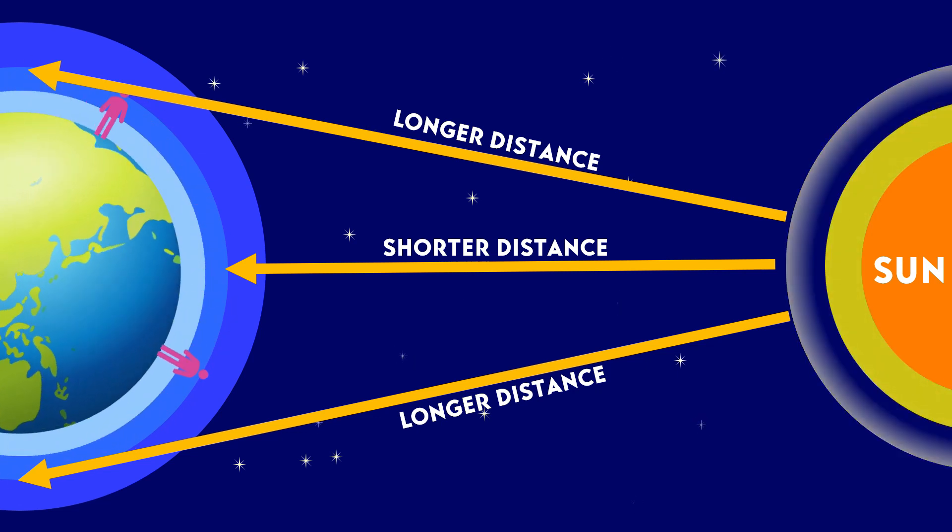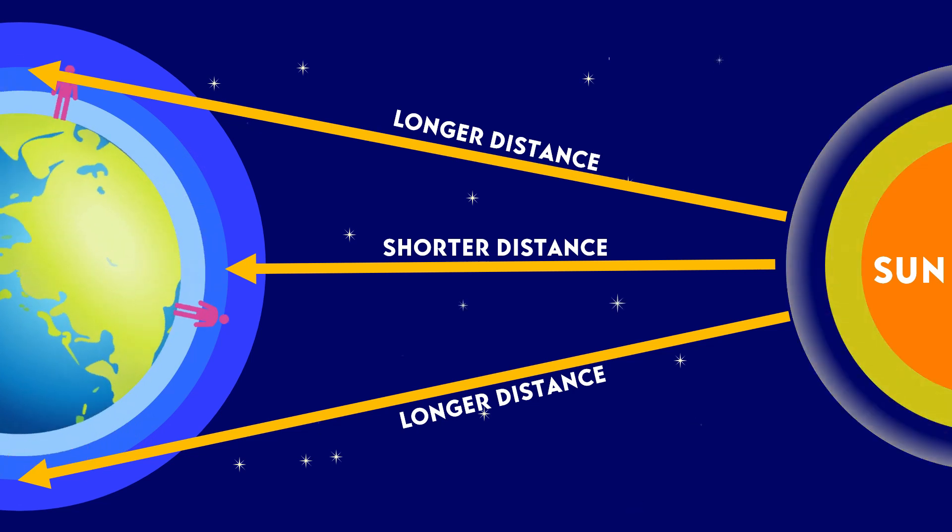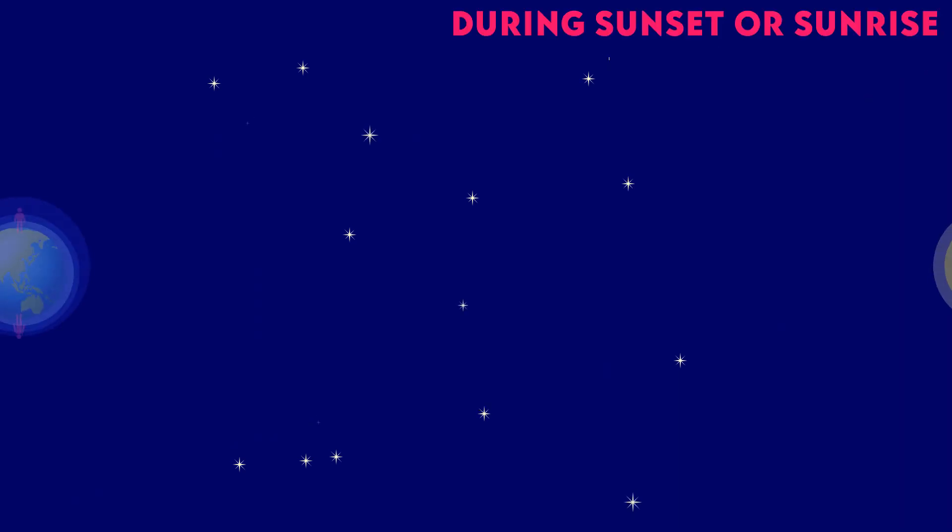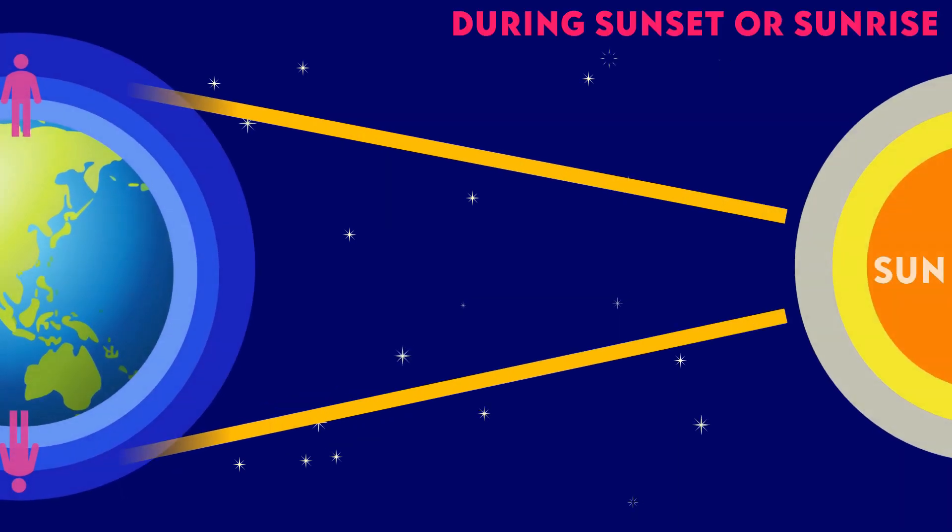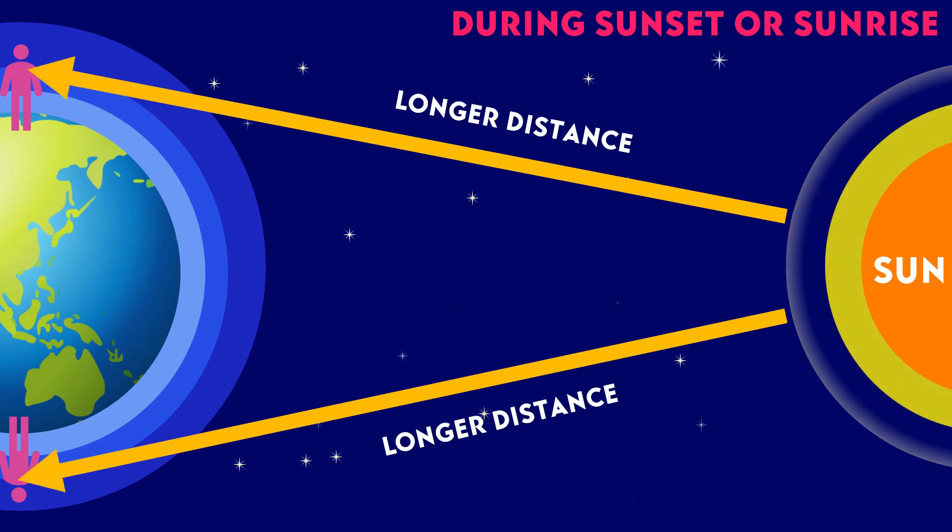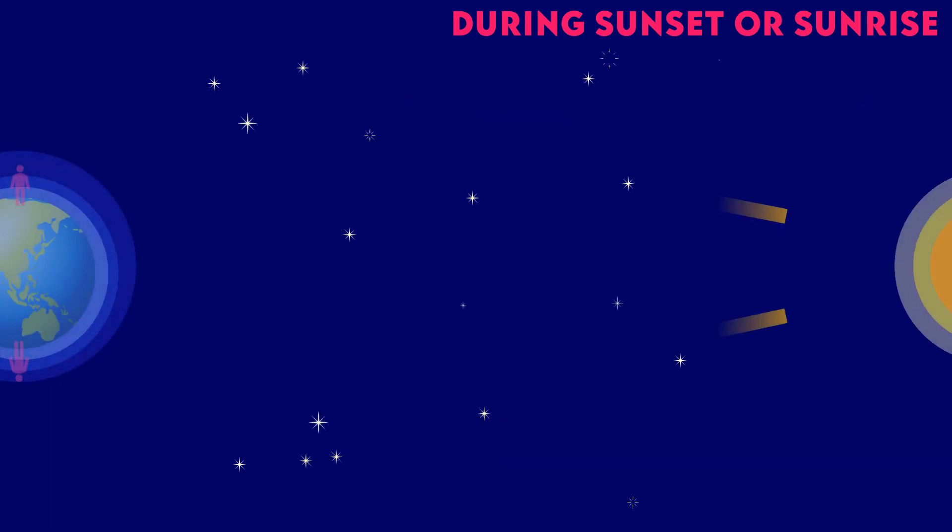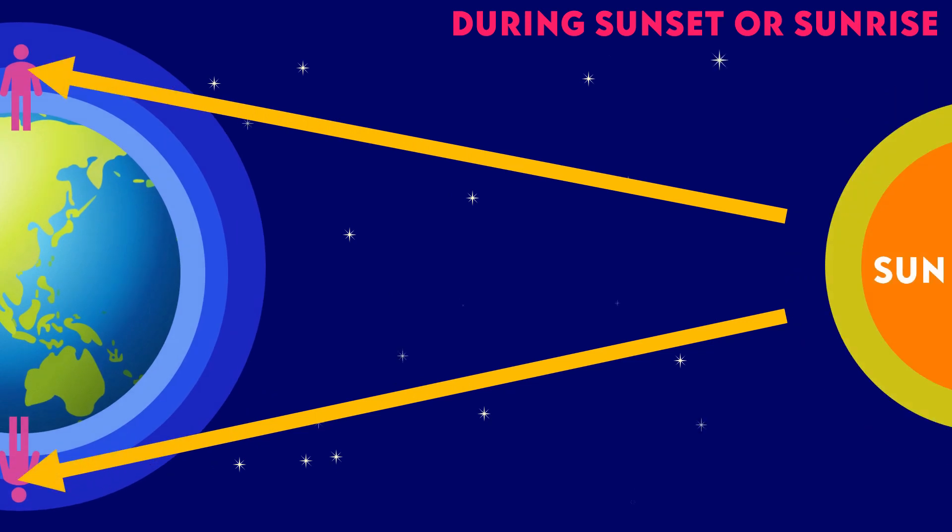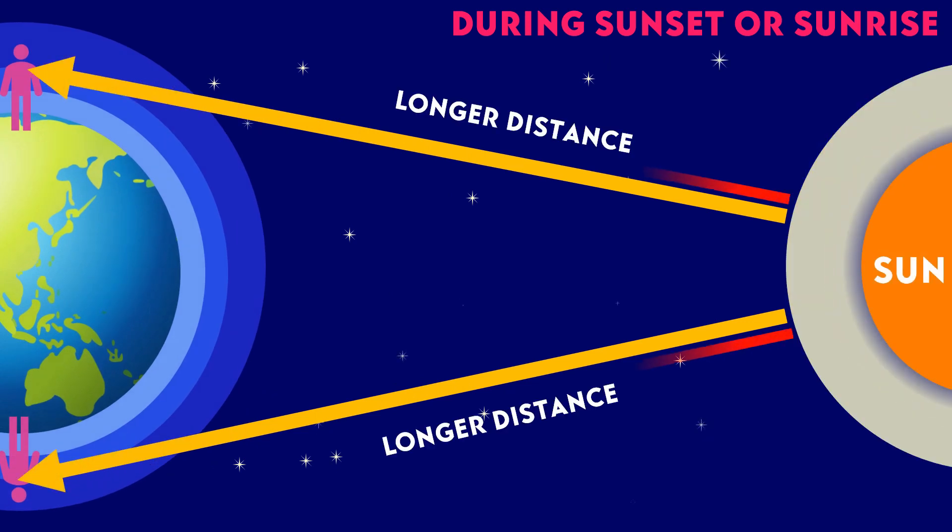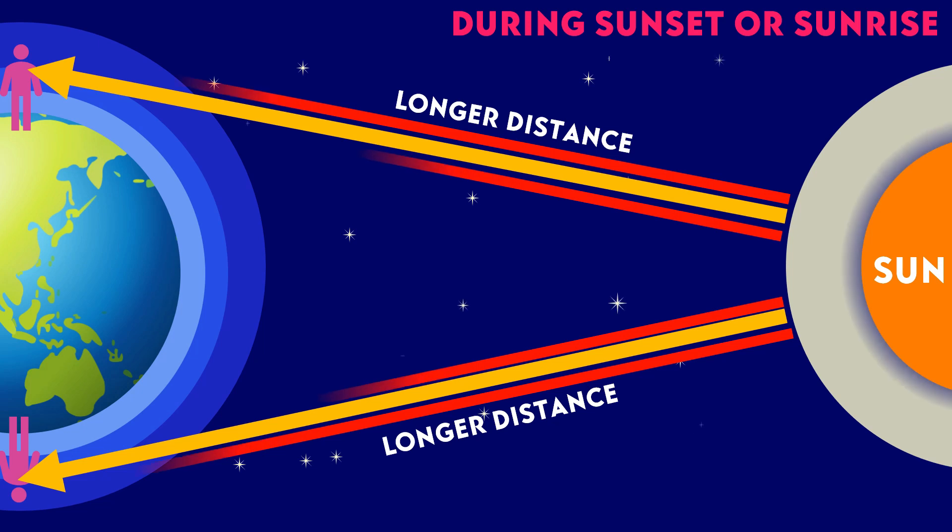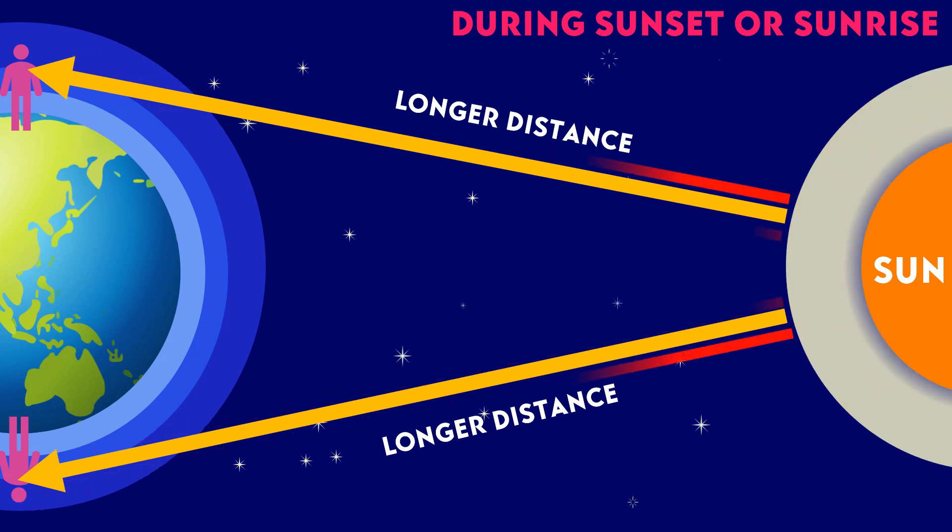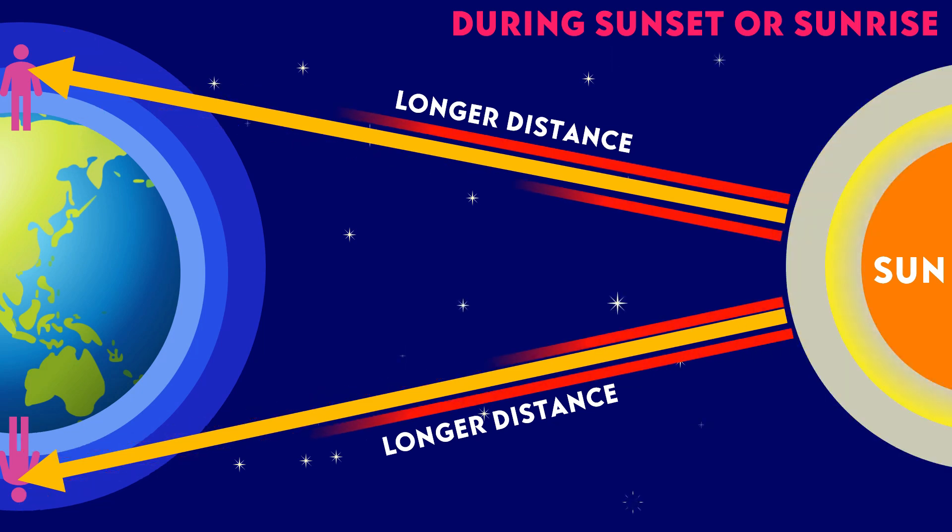The distance depends on the time of day. During sunrise or sunset, the sun shines horizontally so the sunlight travels the longest distance through the atmosphere to reach the observer. Red light with longer wavelengths is less scattered and will reach Earth without any hindrance.